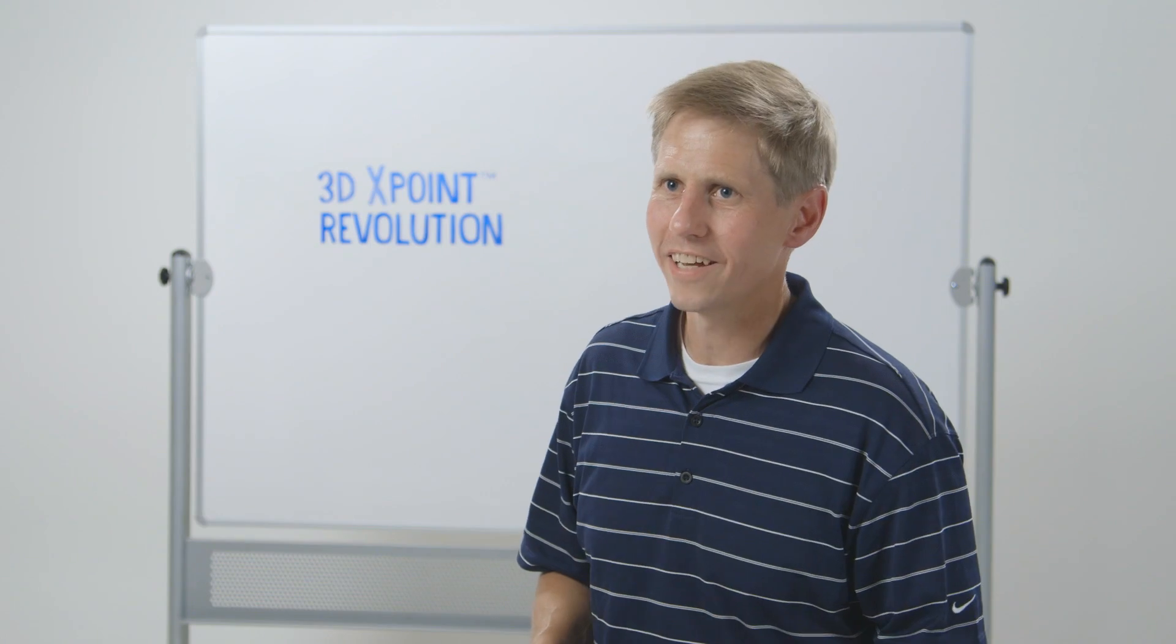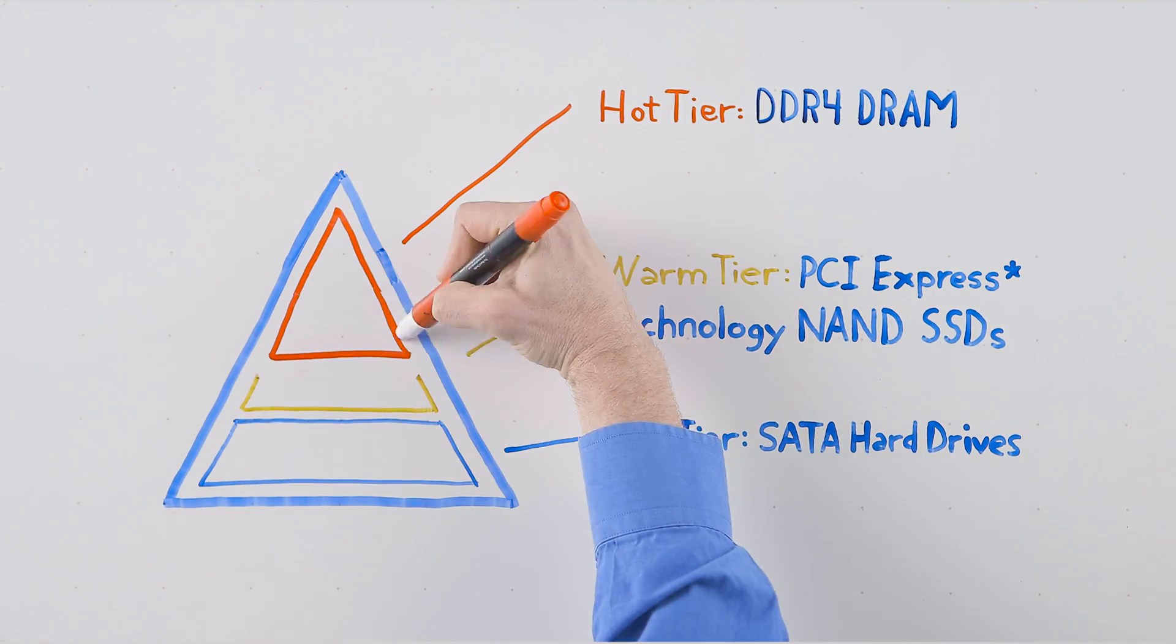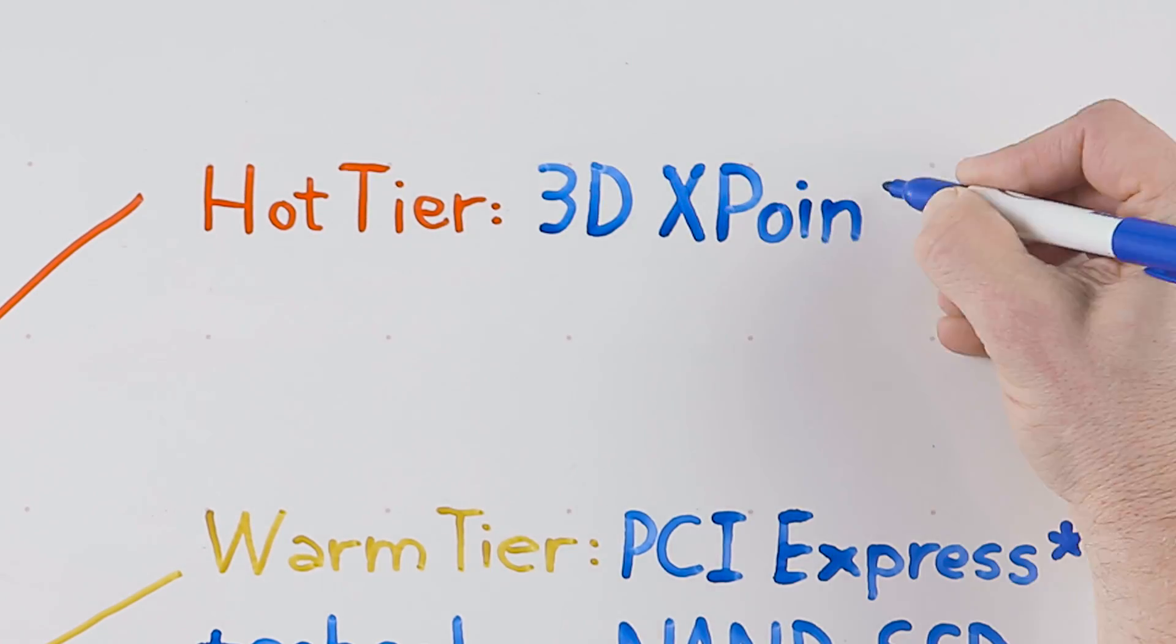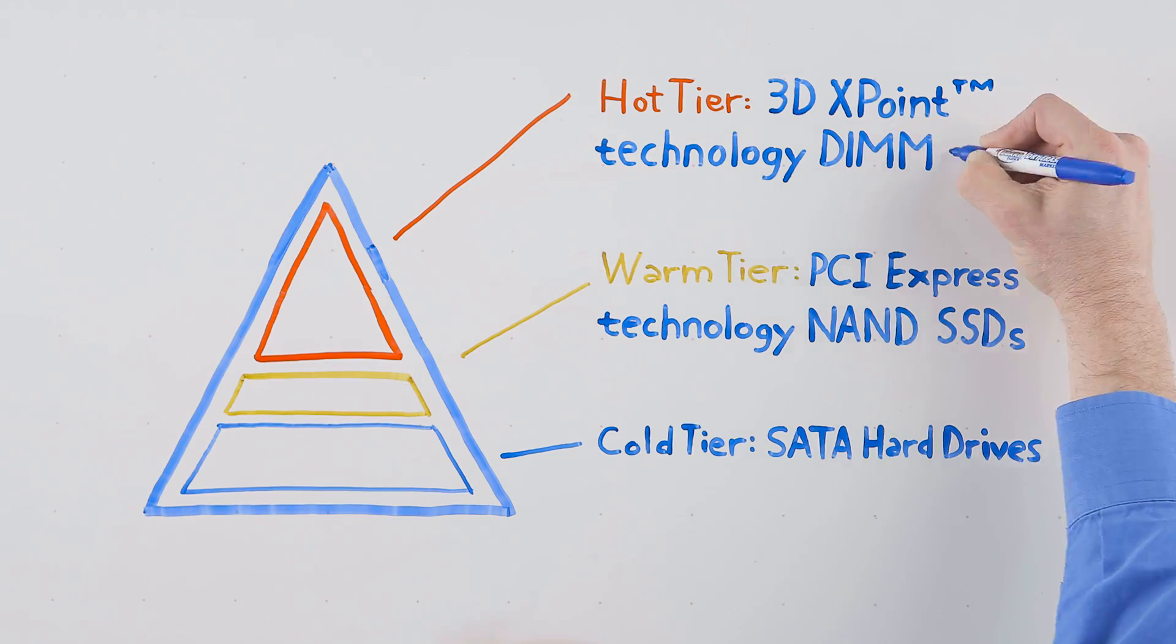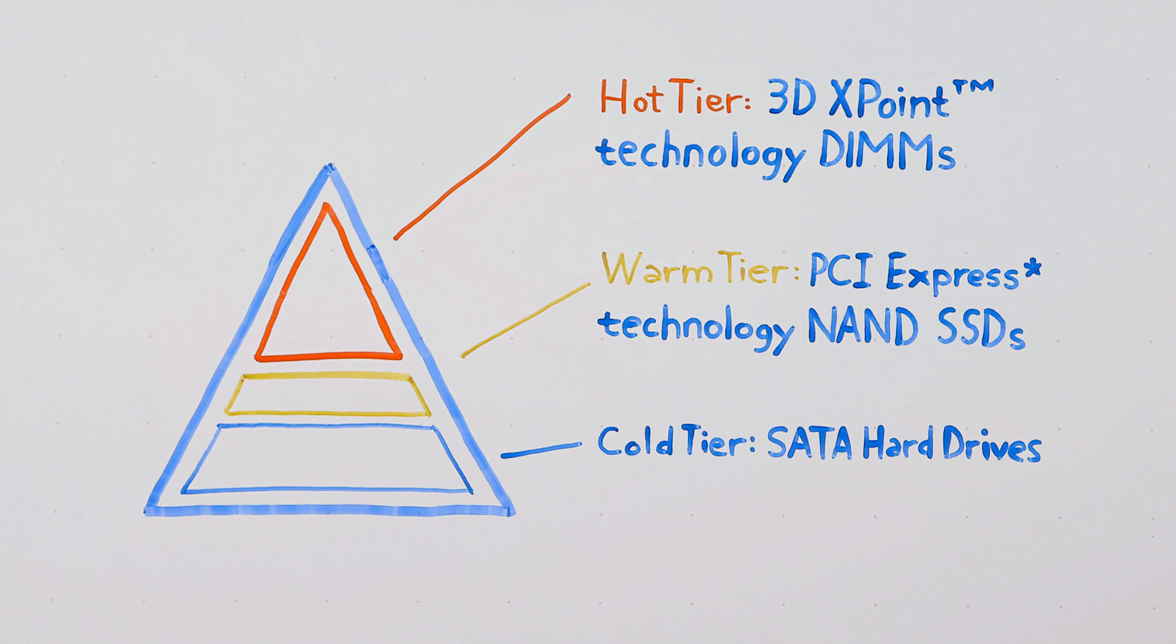The twin revolutions of 3D NAND technology and 3D Crosspoint are going to completely redraw the storage pyramid. Fast, affordable DIMMs based on 3D Crosspoint are going to enable a hot tier that's several times the size at a fraction of the cost.